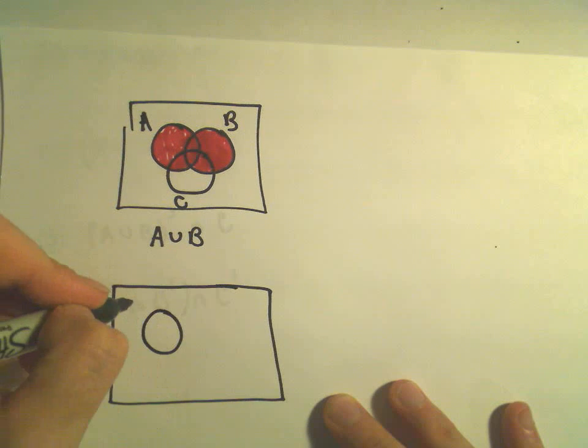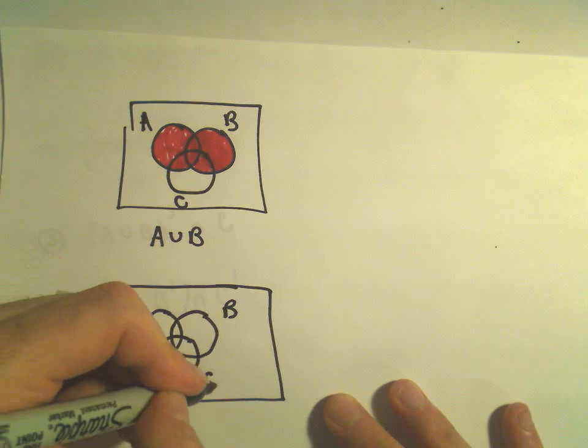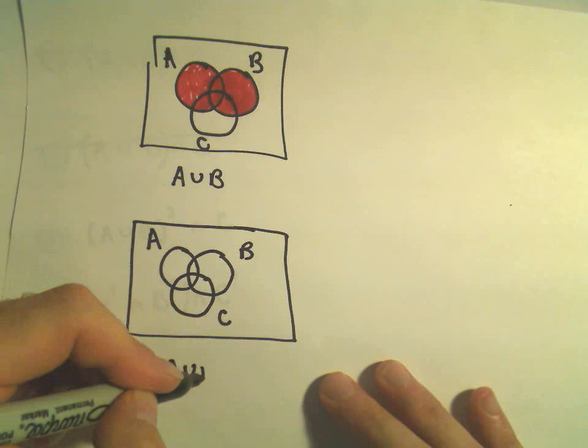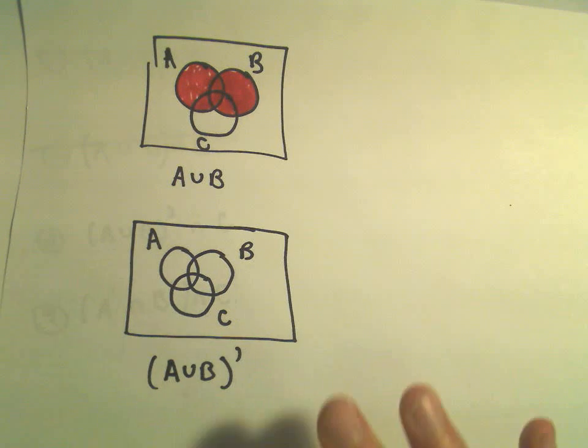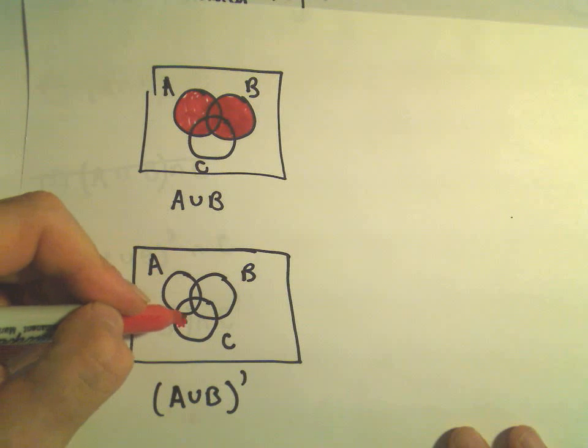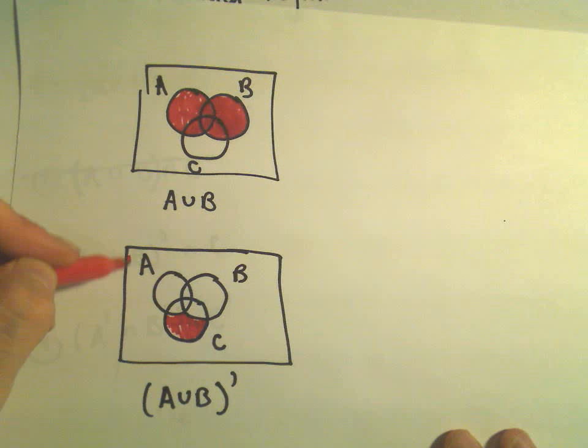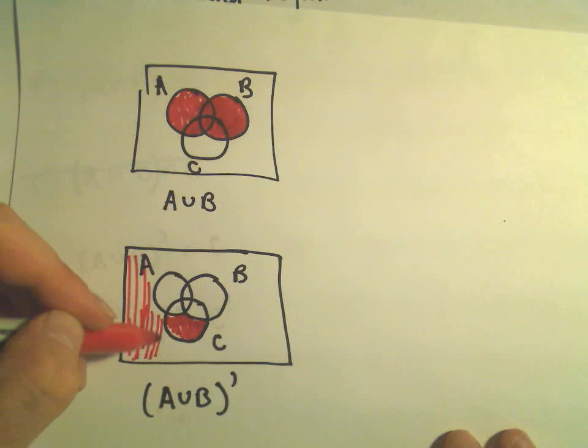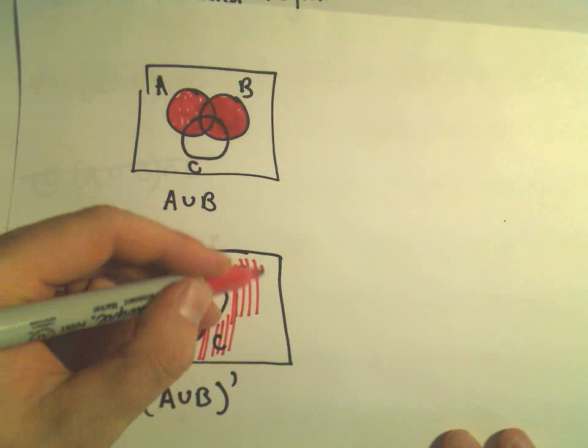But remember this apostrophe says basically shade everything outside of that. So here's A, here's B, there's C. If we do the complement of this region, we're going to shade everything except for what's in those two circles. So we would still get part of C, but we would also get everything outside of there, outside of A and B.